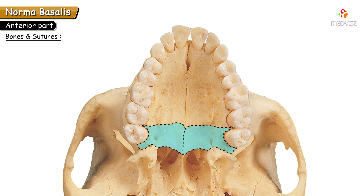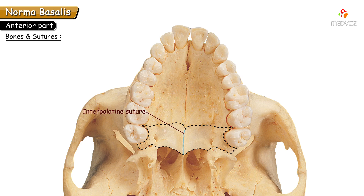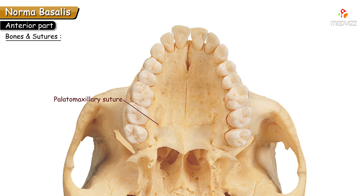The posterior one-third of the hard palate is formed by the horizontal plates of the palatine bone. Both the right and left palatine bones, just like the palatine process of the maxillae, meet in the midline at the inter-palatine suture.